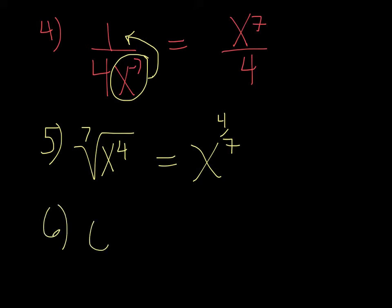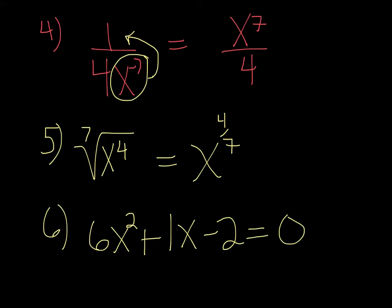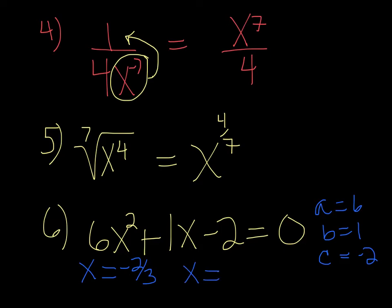Number 6: 6x squared plus 1x minus 2 equals 0. This can be solved with your quadratic formula in the calculator, where a equals 6, b equals 1, and c equals negative 2. You should get two answers: one is negative two-thirds, and the other one is one-half. The problem says to write your answer as an integer or a fraction, so after you get your answers from the quadratic formula program, hit math, enter, enter to change it to a fraction.